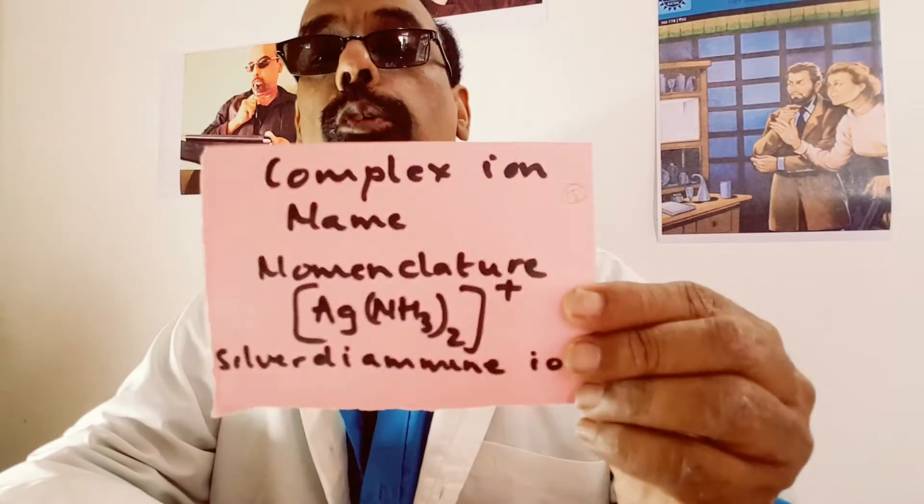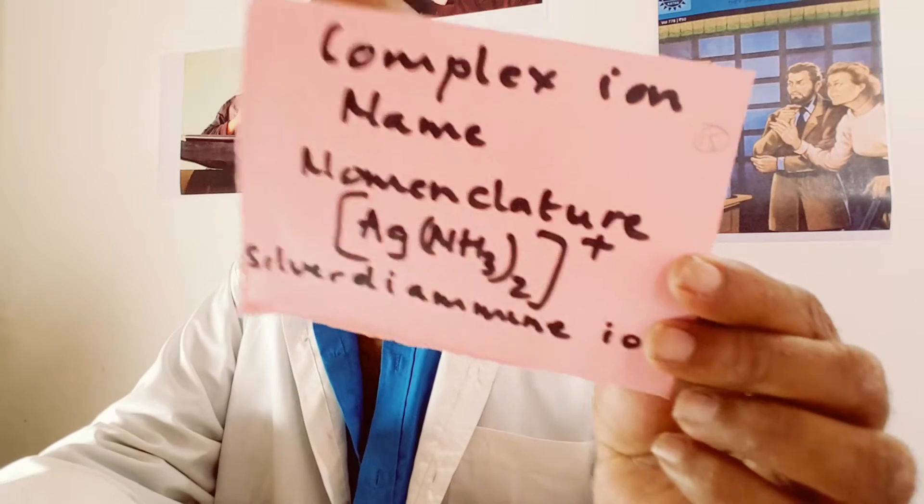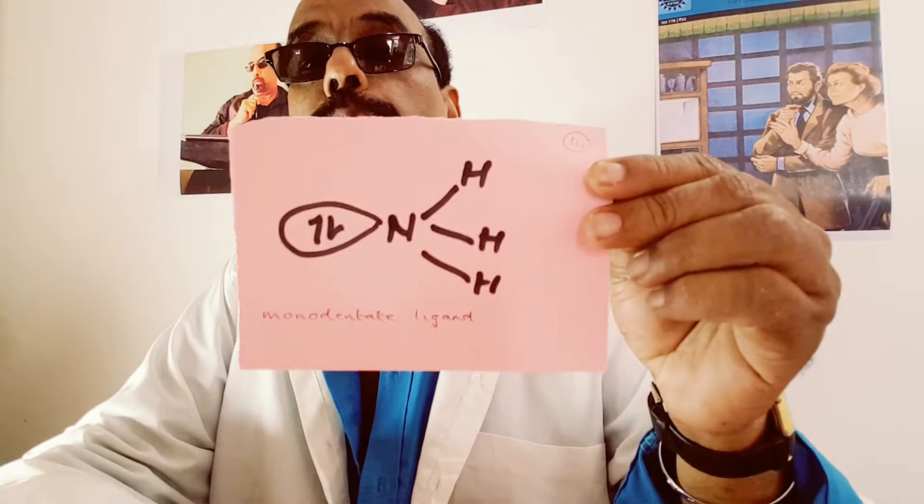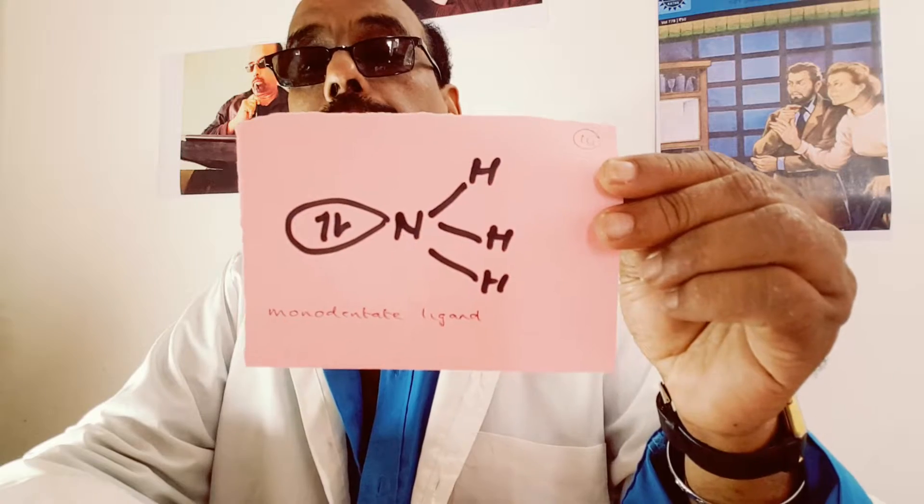A complex ion has a name — this is called nomenclature. This ion is known as the silver diamine ion. Ammonia has one lone pair of electrons, so it is said to be a monodentate ligand.